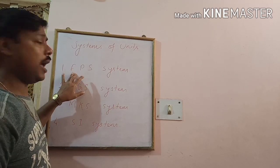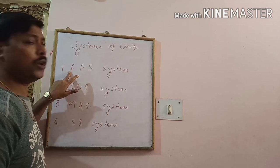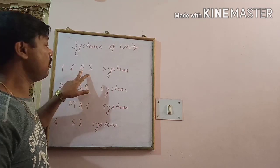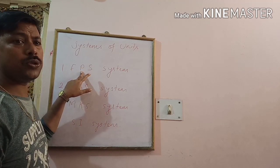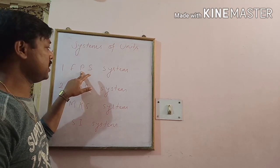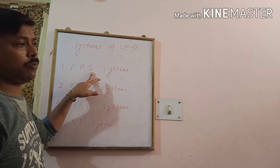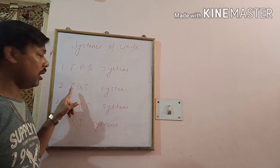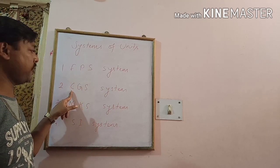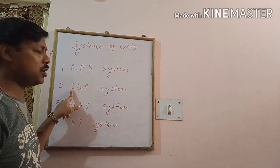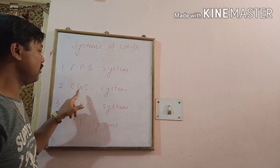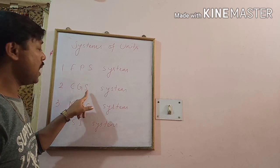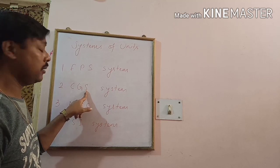In the FPS system, foot is used to measure length, pound is used to measure mass, and second is used to measure time. In the CGS system of units, centimeter is used to measure length, gram is used to measure mass, and second is used to measure time.